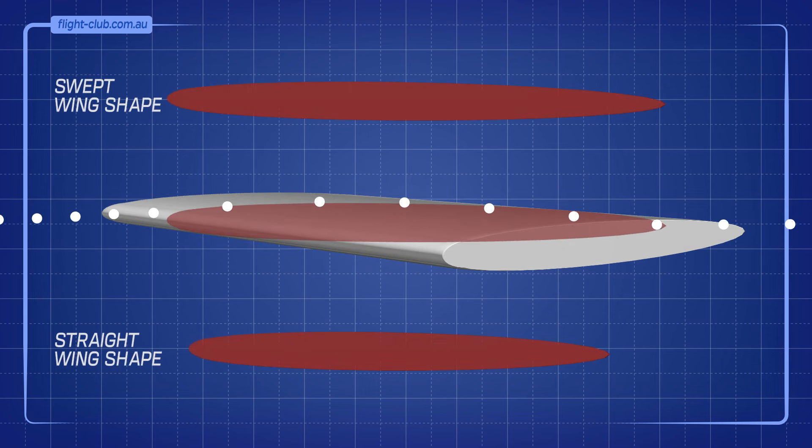Sweeping the wing back reduces the curvature of the wing as seen from the airflow, causing the local airflow to follow a gentler path while reducing the formation of the shock waves.